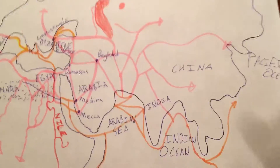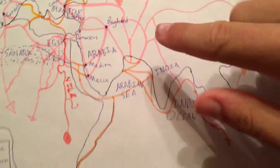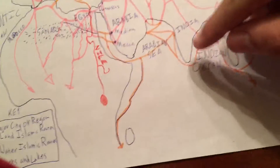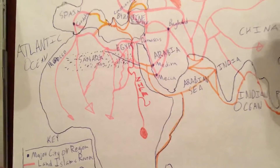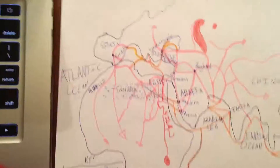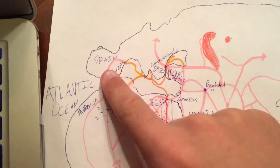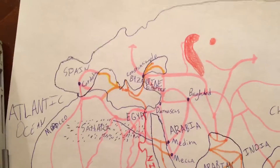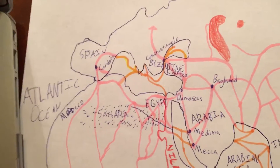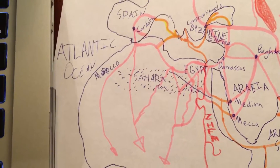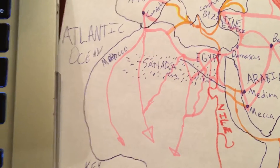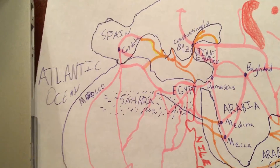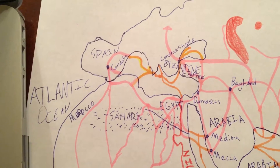Islam ended up spreading from about right in here in northern India, which stayed predominantly Indian and Buddhist, and up in Cordoba it spread, and Spain was very tolerant at the time. It allowed all three of the Abrahamic faiths of Christianity, Judaism and Islam to live in peace with each other.